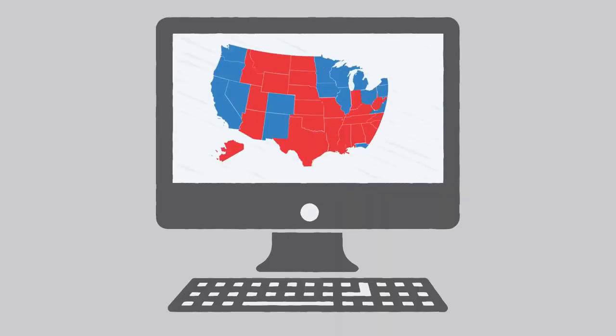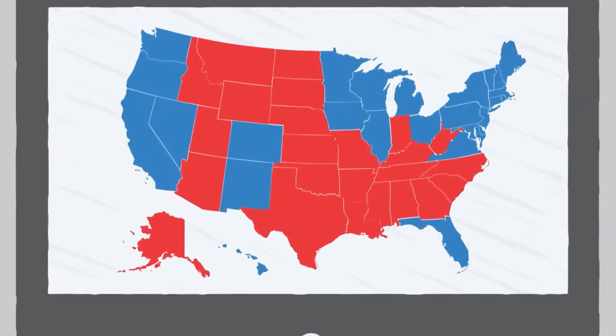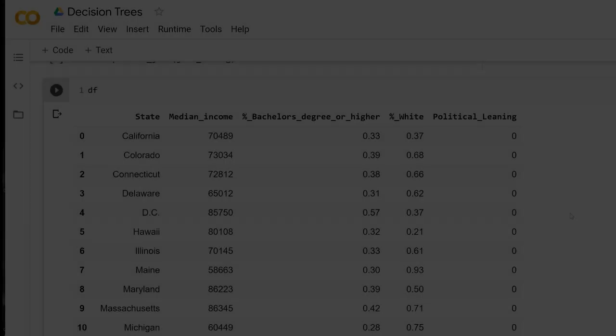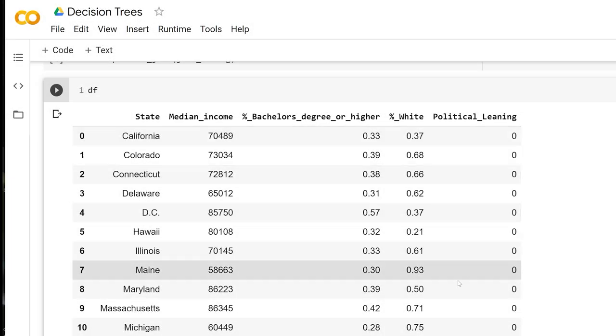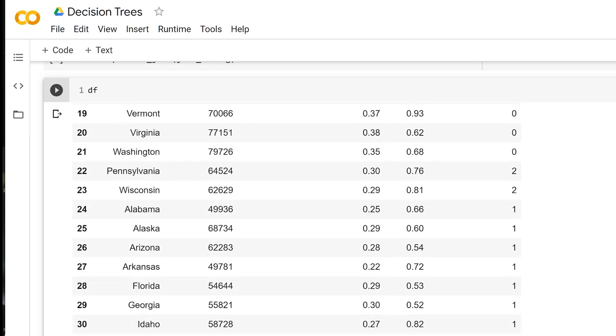Now let's try to construct a decision tree to predict a state's political leaning, that is red or blue, based on these three variables. You might wonder how decision trees make splits when a variable is continuous or numerical in nature, instead of being a simple Boolean true or false.